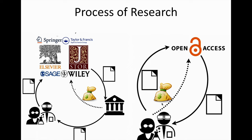Even though this model eliminated the need for institutions to pay large amounts — and if individuals wanted to access directly they also had to pay a large amount of money — that was abolished with the open access system. But the problem with the open access system is that predatory journals later appeared, displaying false credentials and collecting many articles. So this is about the open and closed access system.